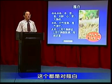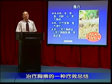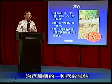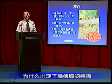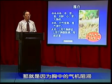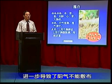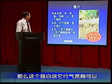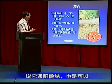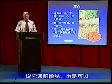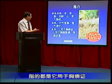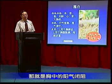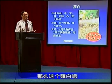这都是对薤白治疗胸痹的一种疗效总结。为什么出现了胸痹胸闷疼痛？就是因为胸中的气机阻滞，进一步导致阳气不能敷布，而痰浊凝滞，这样产生的。说它是行气宽胸可以，说它通阳散结也是可以，指的都是用于胸痹症。胸痹的病理学基础，就是胸中的阳气痹阻。薤白宣通胸中的阳气，实际也是一种行气作用，也可以说是一种通阳作用。